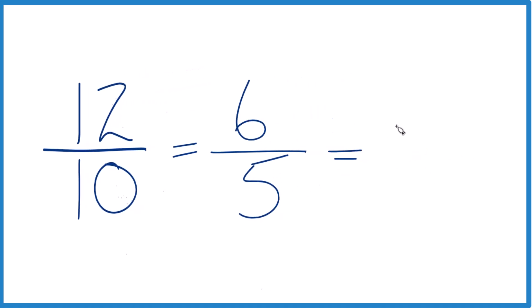5 goes into 6, let's see, 1 times 5, that's 5, with 1 left over, and then we can bring that 5 across, and 6 fifths equals the mixed number 1 and 1 fifth.